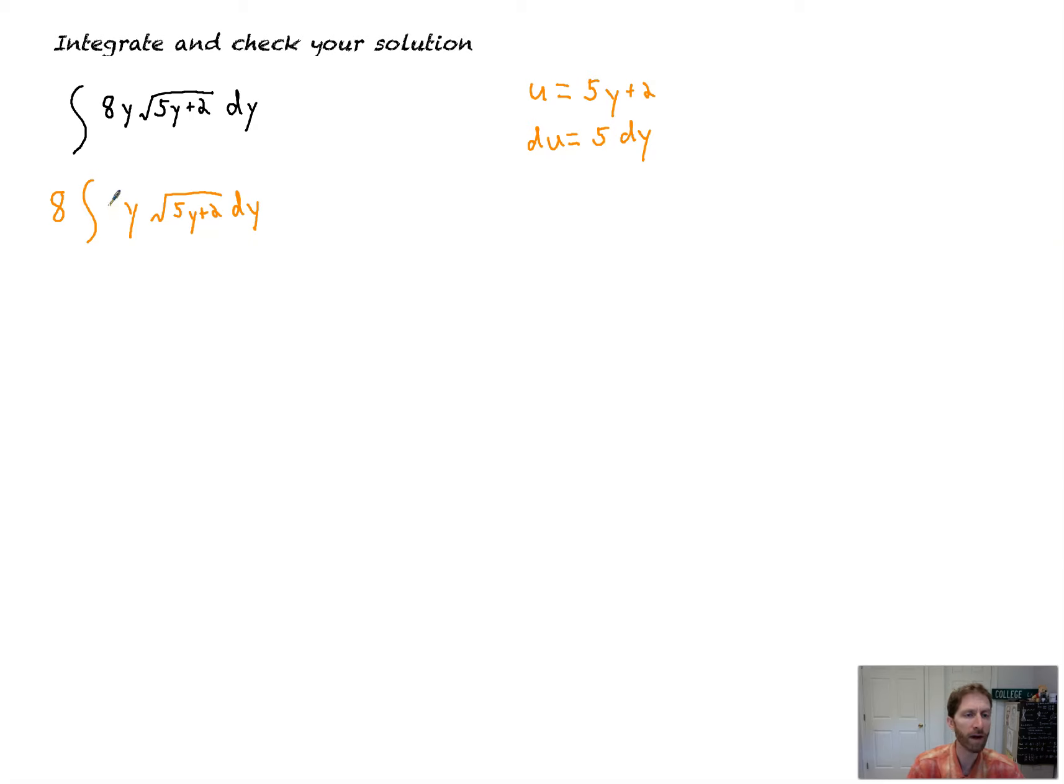And we're going to make that 5dy happen, but something else interesting is going on here. So, first of all, we can make that 5 happen, right? We'll multiply by a 5. There's your 5dy times 1 fifth, right? That balances it out. So, now I'm left with 8 fifths, but look what else happens here. 5dy is cool. That's du, but that y is still there, right? Nothing substituted that y out.